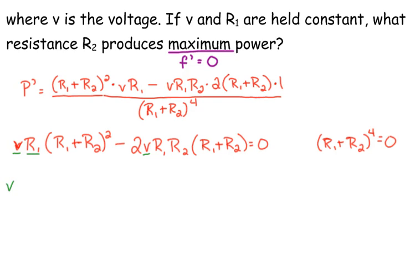They both have V R1 and R1 plus R2, one of them squared, one of them is not, so I can only use one of them. So I use my bracket to put the result of what I have left.